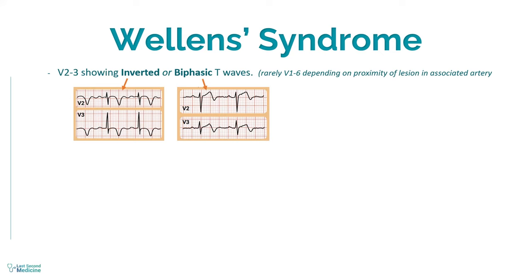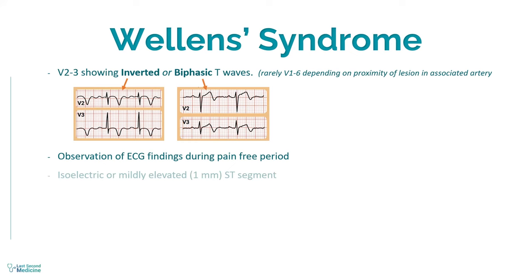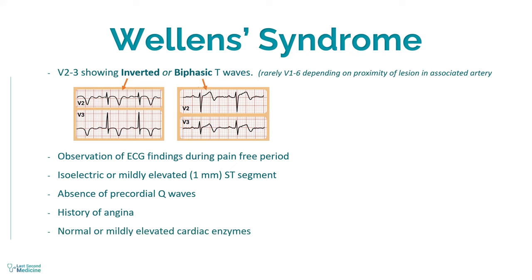Other criteria, in addition to the finding of biphasic or inverted T waves, include the observation of described ECG findings during the painless period, ST segment is isoelectric or is mildly elevated up to 1 mm, absence of precordial Q waves, a history of angina, and lastly, normal or mildly elevated cardiac enzymes.